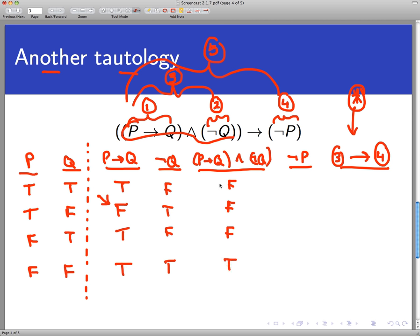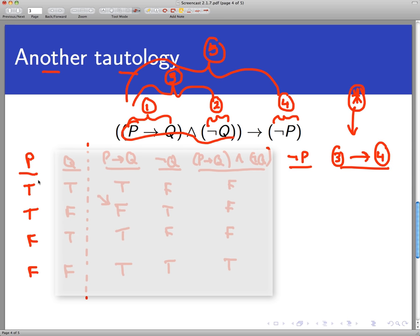Okay, that's the hypothesis of the big conditional statement we're working with. The conclusion of the conditional statement is not P. So I want to just ignore all else and just go over to P and reverse the logical value. So this would be false, false, true, true.